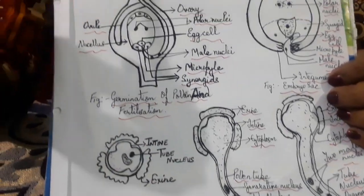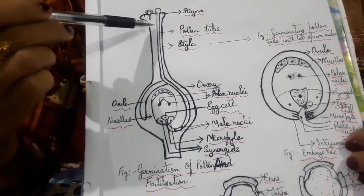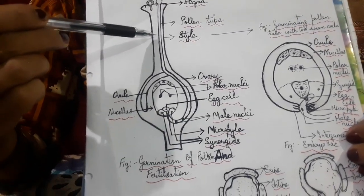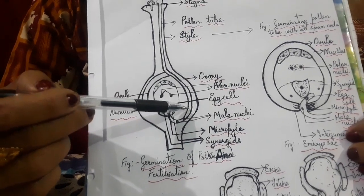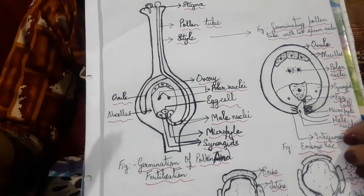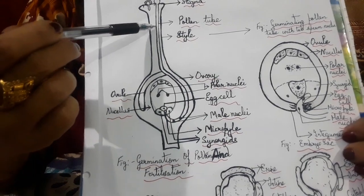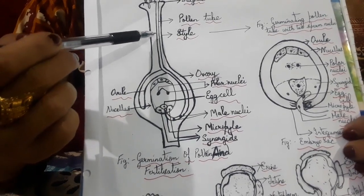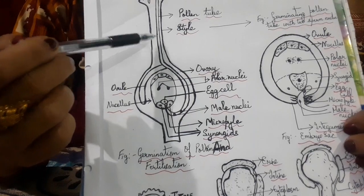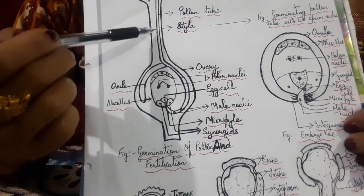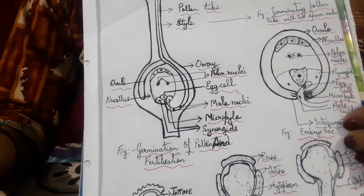Let us again come back to this diagram. As the pollen tube is directed towards the embryo sac, how does it get its nutrition? It gets its nutrition by digesting the sugars secreted by the style and the enzymes, and it is directed towards the embryo sac.